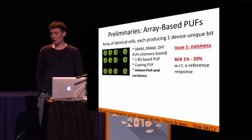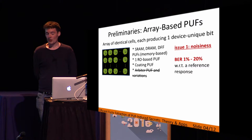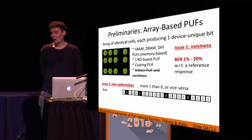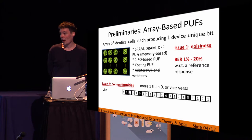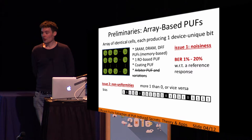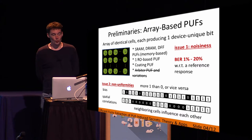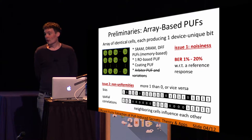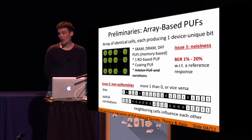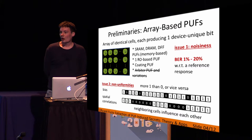There are two issues that need to be resolved to use the PUF identifier as a secret key. One is noisiness — there is a bit error rate between 1% and 20% with respect to a reference response. Second, there are non-uniformities. For array-based PUFs, there are two predominant non-uniformities: bias, where there can be more ones than zeros or vice versa, and spatial correlations, where neighboring cells influence each other, so neighboring bits tend to have the same value.